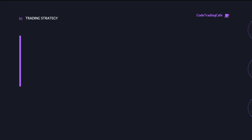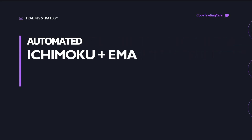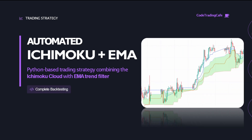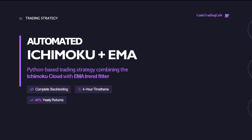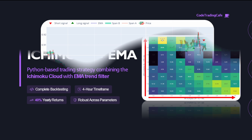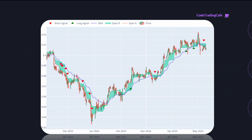Welcome back. In this video we're going to automate a trading strategy that combines the Ichimoku cloud with the EMA trend filter in Python, then run a complete backtest on historical data. I backtested this strategy on the four-hour time frame across multiple assets and the results were quite interesting — yearly returns reached around 40% in some cases, and the system stayed positive across most stop loss and risk reward parameter combinations, even including commission fees.